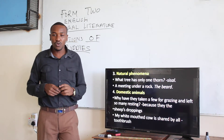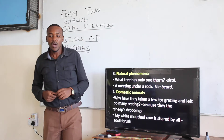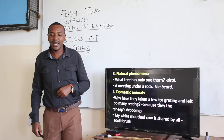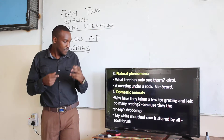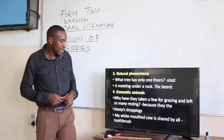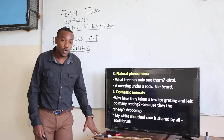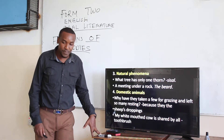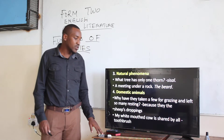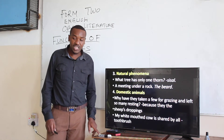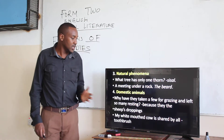Then we have riddles about domestic animals. An example: 'Why have they taken a few for grazing and left so many resting?' — the answer is sheep's droppings. Another: 'My white-mouthed cow is shared by all' — the response is a toothbrush. So domestic animals are mentioned in that type of riddle.